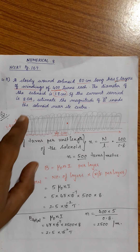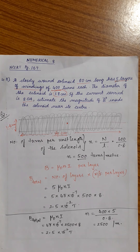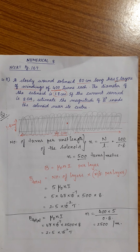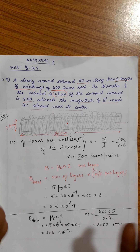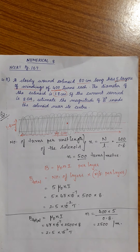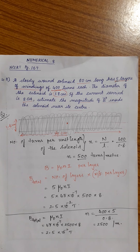The only remaining question is why the diameter was given. There is a formula for the magnetic field of a solenoid derived using the Biot-Savart law, where you get cos θ₁ and cos θ₂ terms. The diameter would be useful in that case, but here it is not necessary because the length is very much greater than the diameter. Thank you.